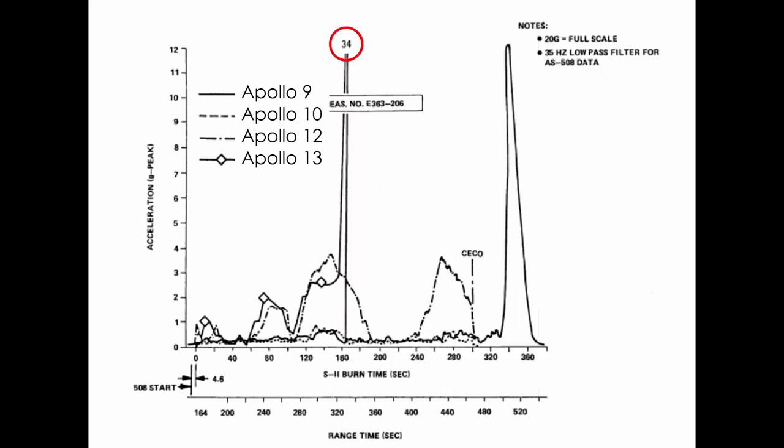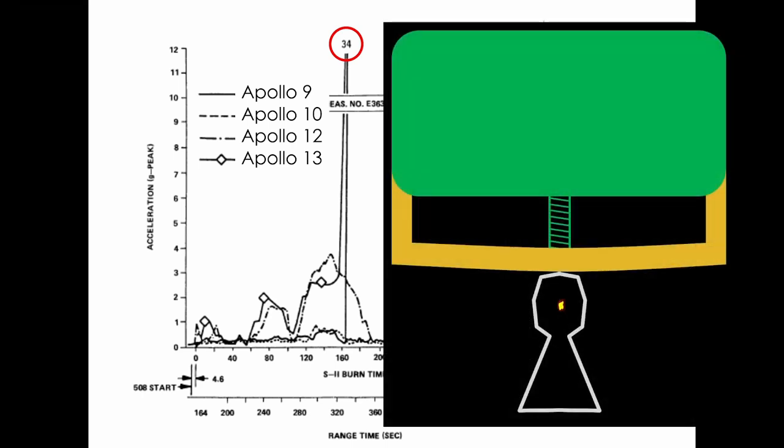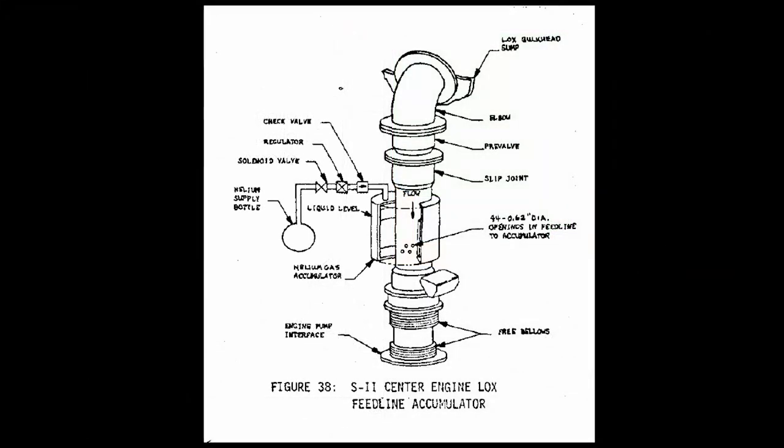On Apollo 13, at about 160 seconds, the center engine experienced an acceleration of 34 Gs. The top of this chart is only 12 Gs, so it's really an unprecedented level of acceleration. The reduction in pressure when the engine flexed down was so significant that the engine thought it had run out of propellant and shut itself down, and that saved the vehicle from structural failure on the next cycle. The fix was pretty simple. Add an accumulator as was done on the first stage, but there was very little room. NASA ended up taking an existing part of the piping, drilling holes in it, and encasing it in a drum that was pressurized with helium. That was enough to fix the problem.